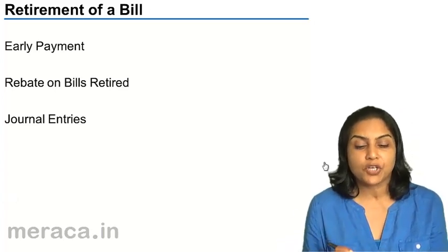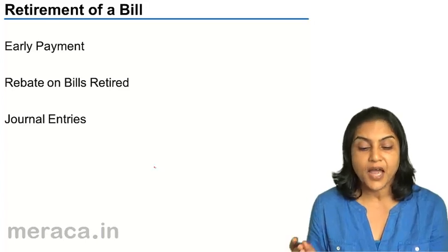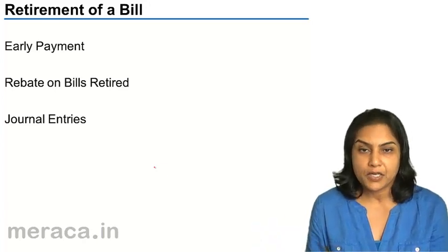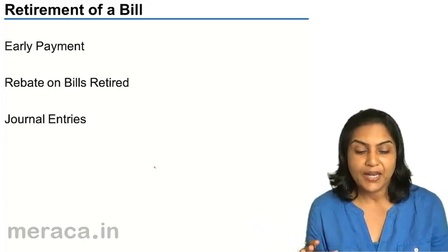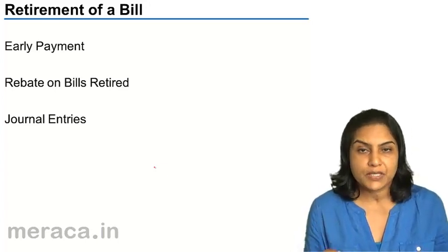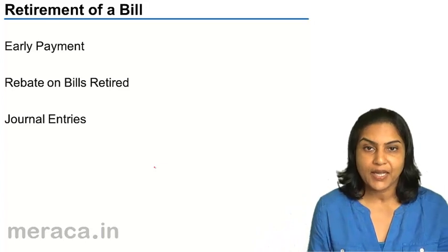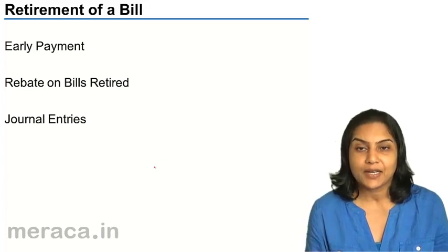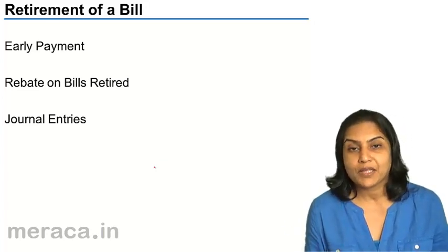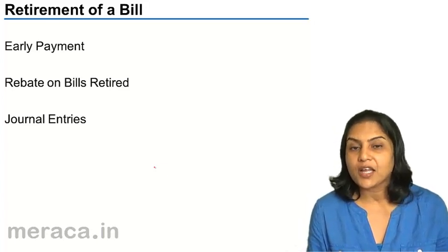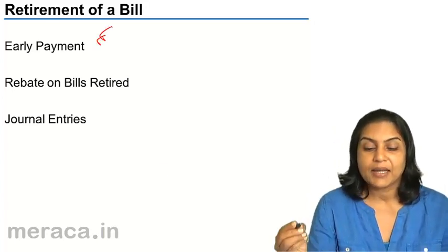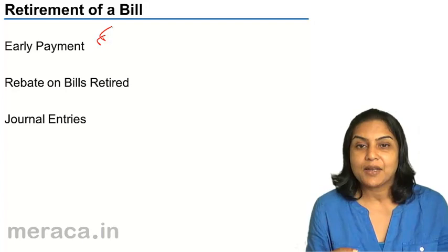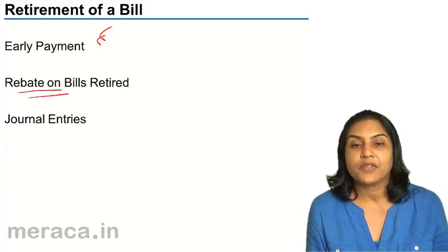We will now discuss another small topic called retirement of a bill. Retiring of a bill is early payment of a bill. If a bill is for three months and after two months the debtor wants to pay up the money, he can do so. But usually he would also expect one month's interest since he is paying the money one month before the due date. So retiring of a bill is nothing but an early payment, and normally when there is early payment there is an interest element involved, which is called a rebate on the bills retired.